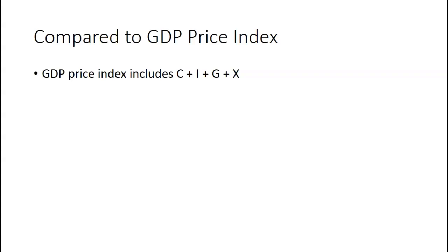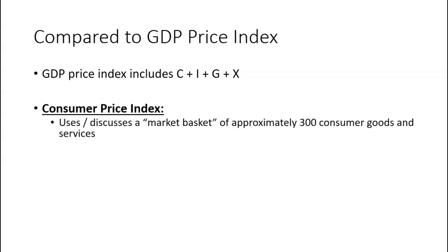The GDP price index includes C plus I plus G plus net exports, so it includes everything. The Consumer Price Index, which is the usual one we look at, is going to mostly only be looking at household consumption — so it doesn't include businesses or governments. It covers personal consumption including net exports, but it's only on consumption, approximately 300 consumer goods and services.